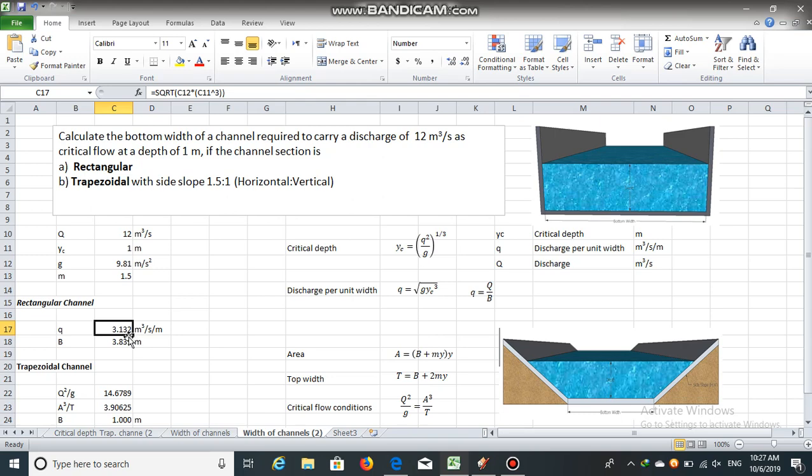If we solve this, we'll get the discharge per unit width equal to 3.132 meter cube per second per meter. This small q, the discharge per unit width, is equal to Q by b. Q is the total discharge and b is the bottom width. So bottom width equals 12 meter cube per second divided by 3.132 meter cube per second per meter, giving us a bottom width of 3.831 meters.